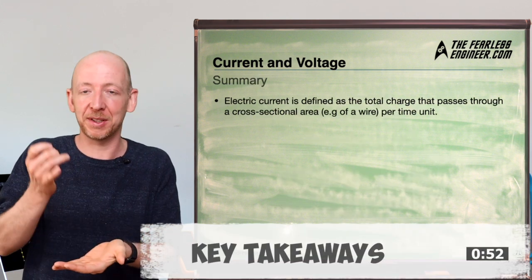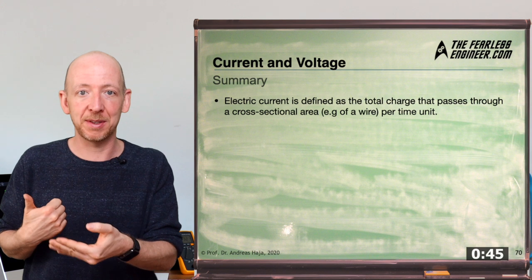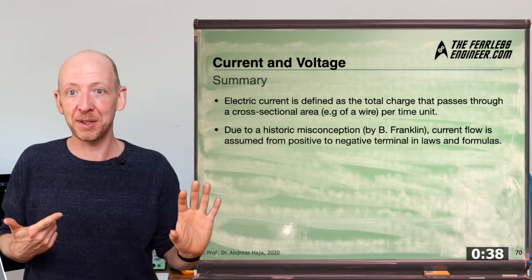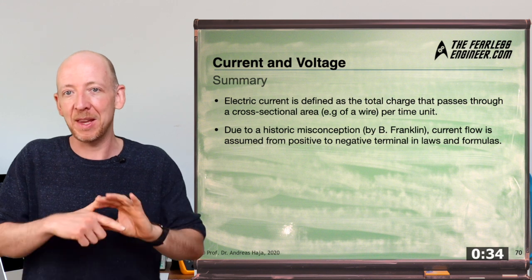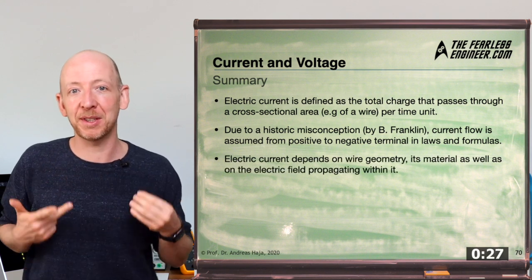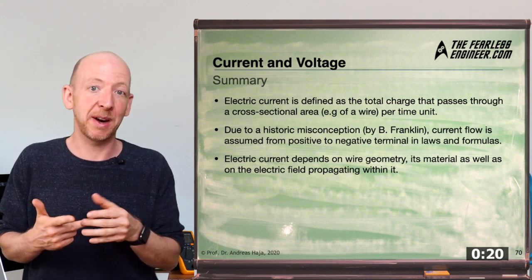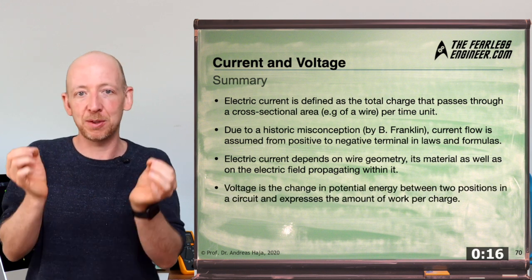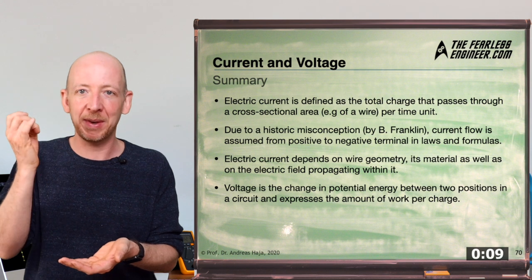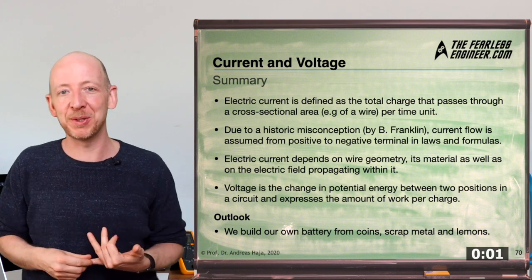Let's sum up what we've learned. First, electric current is defined as the total charge passing through a cross-sectional area per time unit. Second, due to a historic misconception by Benjamin Franklin 300 years ago, we assume current flow from the positive to the negative terminal in many basic laws and formulas in electronics. Third, electric current depends on wire geometry, material, and the electric field propagating within it. Finally, voltage is defined as the change in potential energy between two positions in a circuit — the amount of work performed per charge.